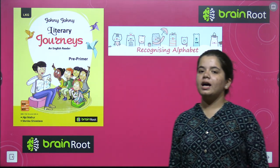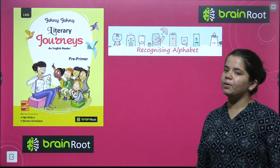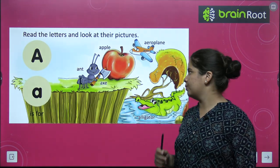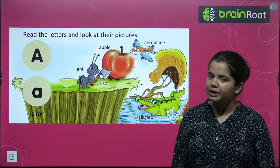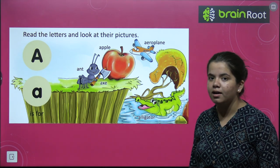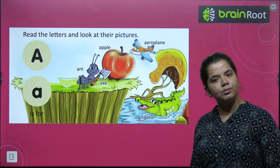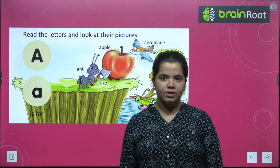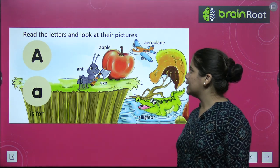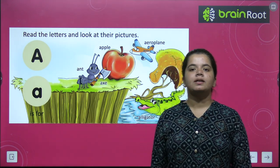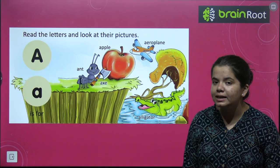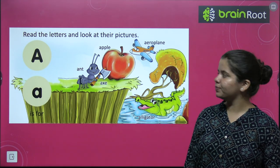Aaj is chapter ka naam jo hum padh rahe hain, uska naam hai: Recognizing Alphabet. Recognizing ka matlab kya hota hai bacho? Recognizing ka matlab hota hai pehachanna. Is chapter ke andar hum saare alphabets ko padhenge aur unko pehachanne ki kooshish karenge. Thik hai bacho?